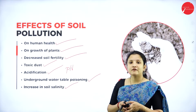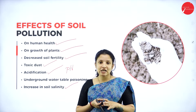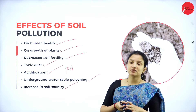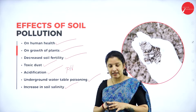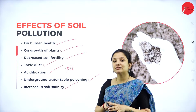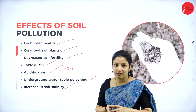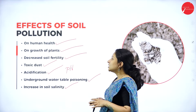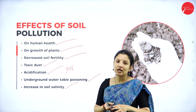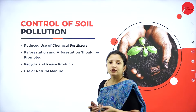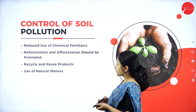Soil pollution can also increase the salinity of the soil. The use of chemical fertilizers in agriculture can make the soil more saline. If the salt content in the soil increases, it will affect the overall growth of the plant as well. Therefore, soil pollution can increase the salinity or salt content in the soil. Next, let's talk about the control measures of soil pollution.